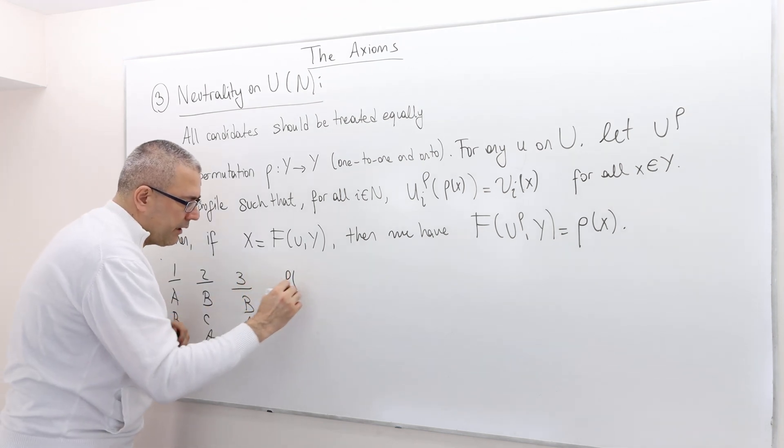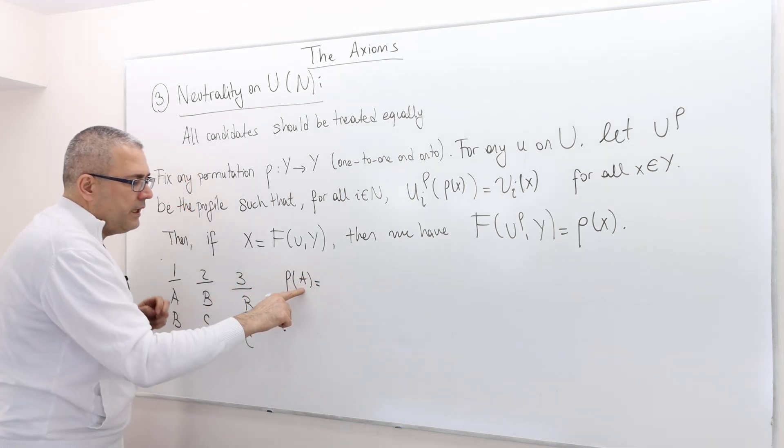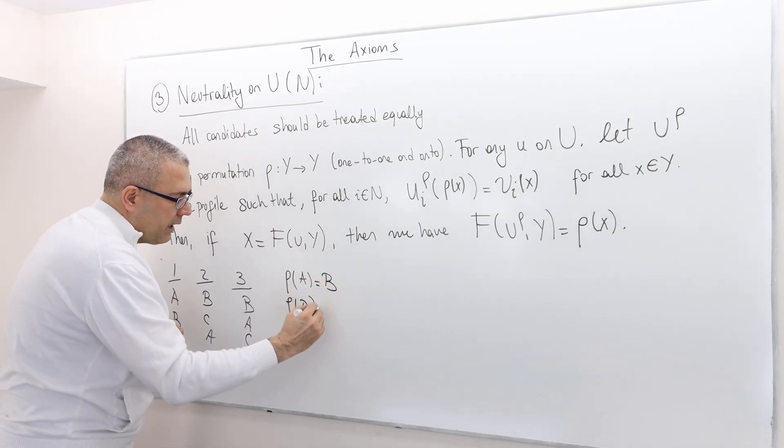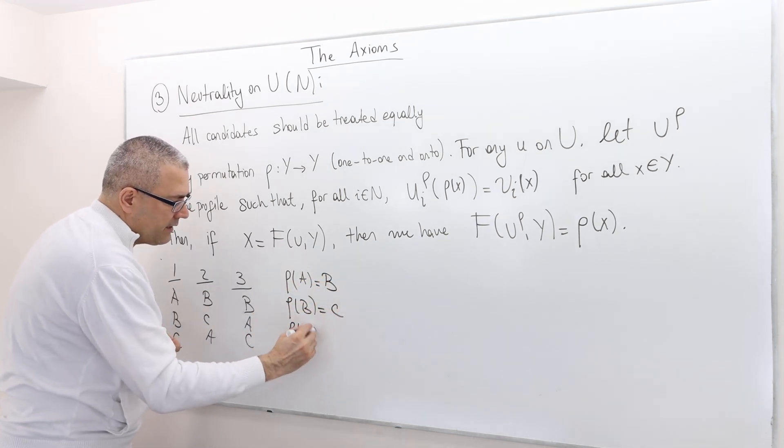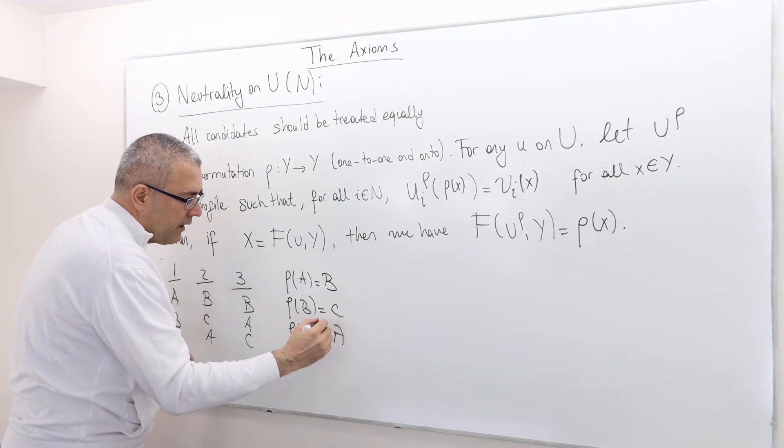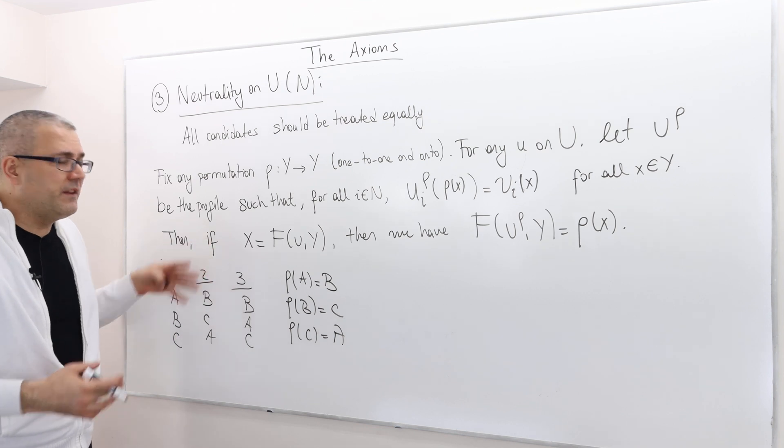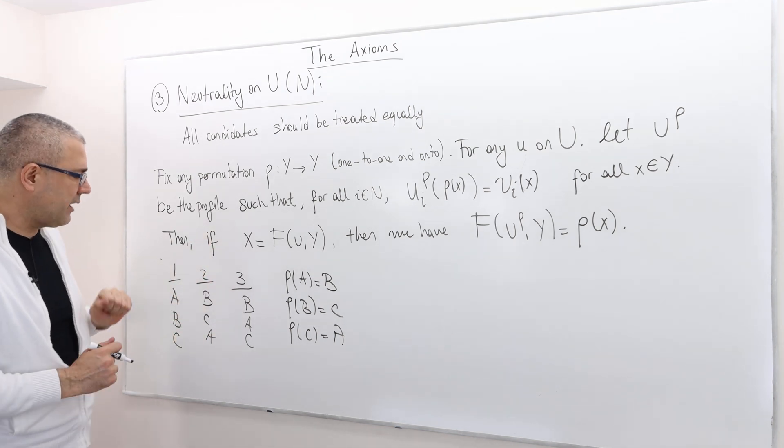And here's the permutation I'm going to use. So, A, I'm going to call it B. B, I'm going to call it C. And then C, I'm going to call it A. There are a bunch of other permutations, I know. This property should hold for all the permutations.